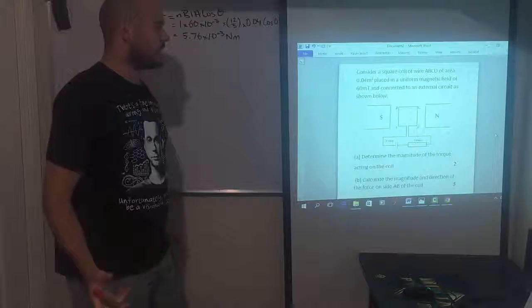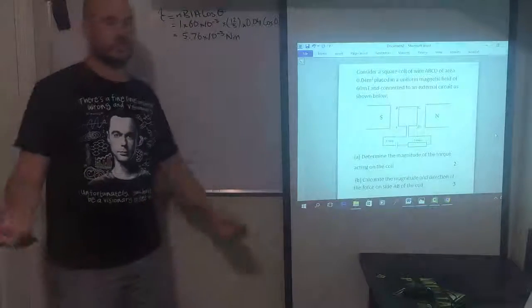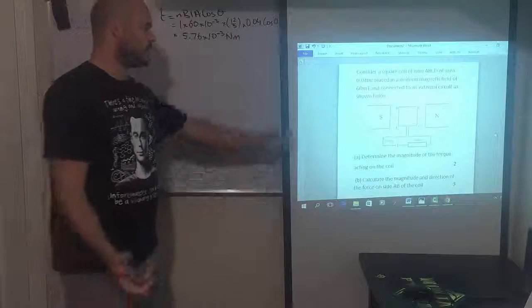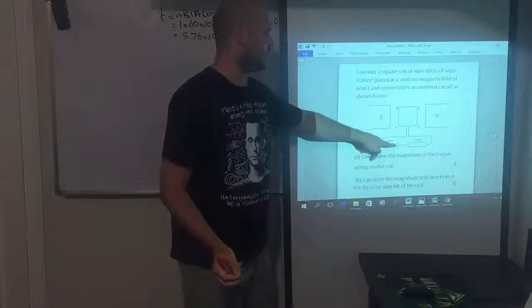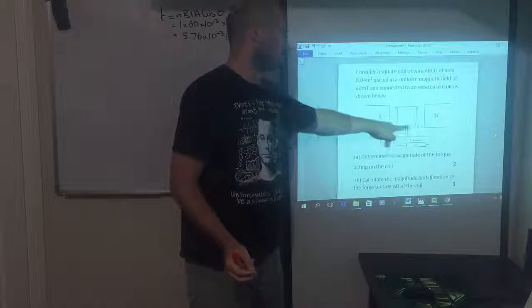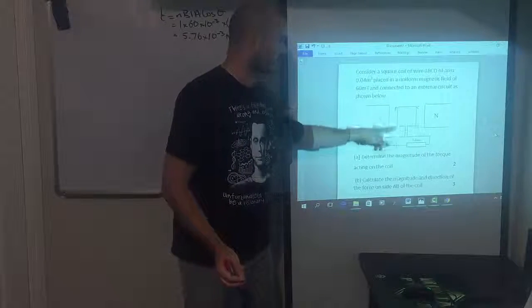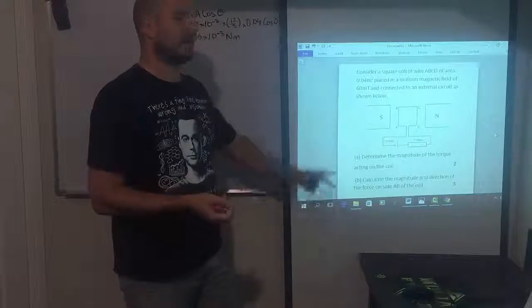Again, it only asks for magnitude so you don't need to give it a direction, but if it did want a direction, all we'll do is we'll say, well the current runs from positive to negative, so the current is running through this way from D to C to B to A, then we'll just use our right-hand panel on both sides.